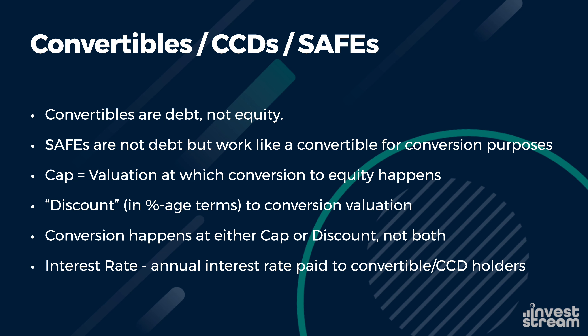Next, we're going to talk about convertibles, CCDs, and SAFEs. Convertibles and SAFEs are primarily used in the US, though we do see some variation in India. CCDs were more common especially with foreign investors. Convertibles are debt — they're not equity. Convertible notes do have an interest rate and theoretically are supposed to be paid back, but most founder-friendly investors will have a provision that convertibles will convert into equity at some point based on certain triggers, like raising a Series A of a million dollars or more.